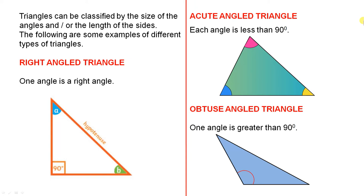The first triangle we're looking at here is called the right angled triangle. What that means is that one angle is a right angle — there it is there. You can either have that symbol there, which means it's a right angle, but we've also included the degrees here to let you know that actually means 90 degrees. Those two angles, angle A and angle B, are acute angles — they're less than 90. That has to be the case because the three angles of a triangle add up to 180 degrees.